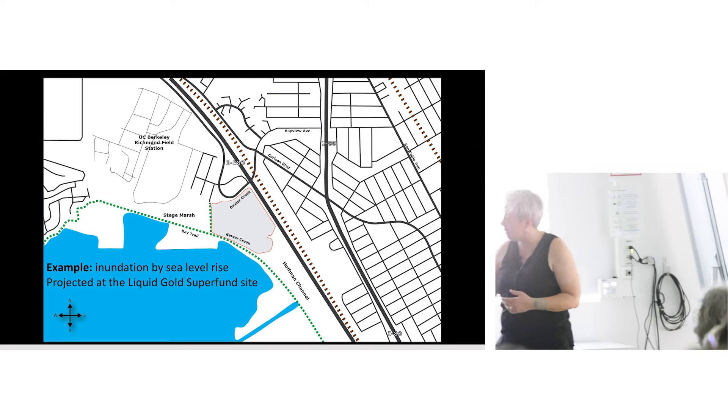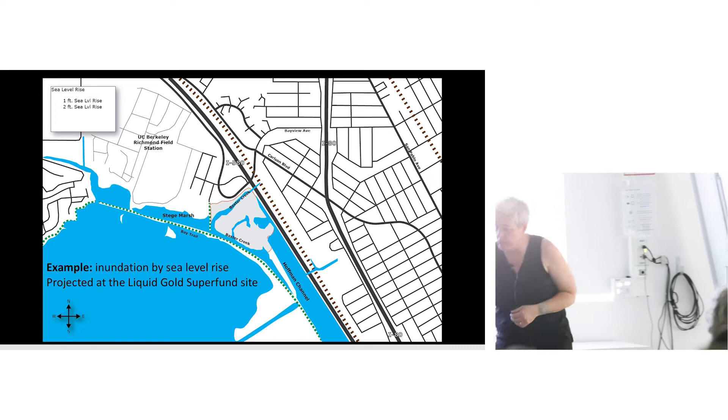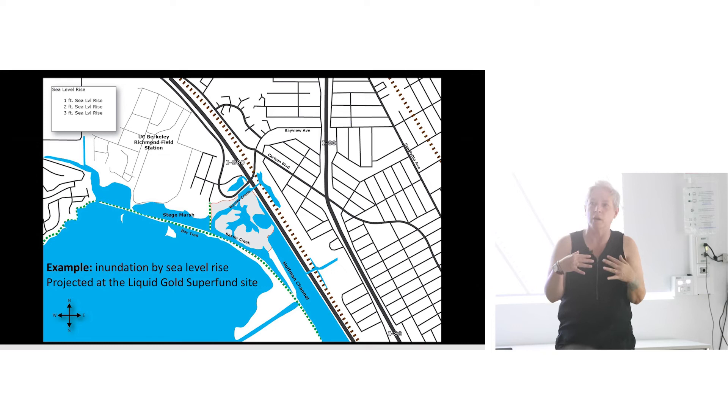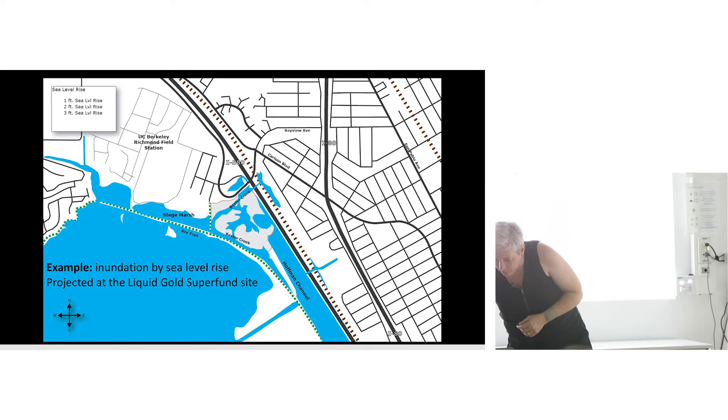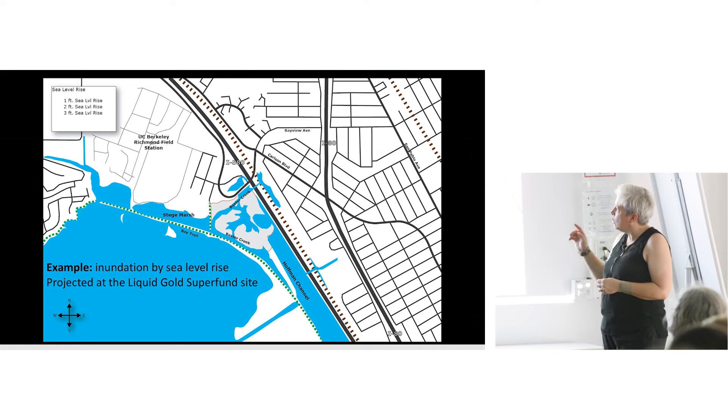I wanted to show you what's going to happen as sea level rises to that site. This red outline shows approximately the same area of that particular site. That's one foot or about 30 centimeters of sea level rise. And you can see the water is coming up onto the site from the southeast. That's two feet or 60 centimeters.